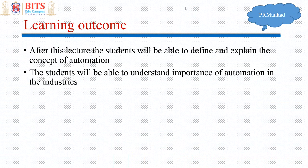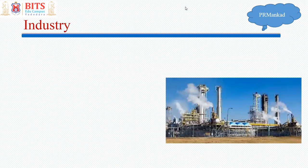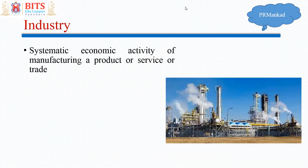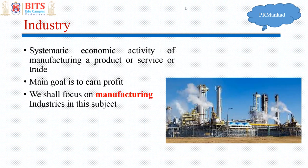After this lecture, regarding industry — we know that it is a place where some economic activity is going on, some production is going on, some services are going on. As per the standard definition, it is the systematic economic activity of manufacturing a product, a service, or trade. The main goal of industry is to earn a profit. In this subject we shall focus mainly on manufacturing industries.